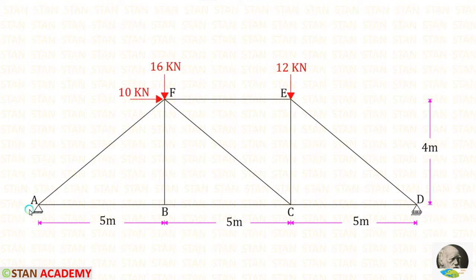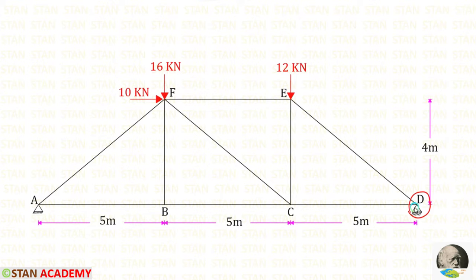In this truss, at point A there is a hinged support, where we will have vertical and horizontal reactions. At point D there is a roller support, which has only one reaction — the vertical reaction. At point F there are two loads: 16 kilo newton acting downwards and 10 kilo newton acting towards the right side. At point E we have one load, 12 kilo newton acting downwards.